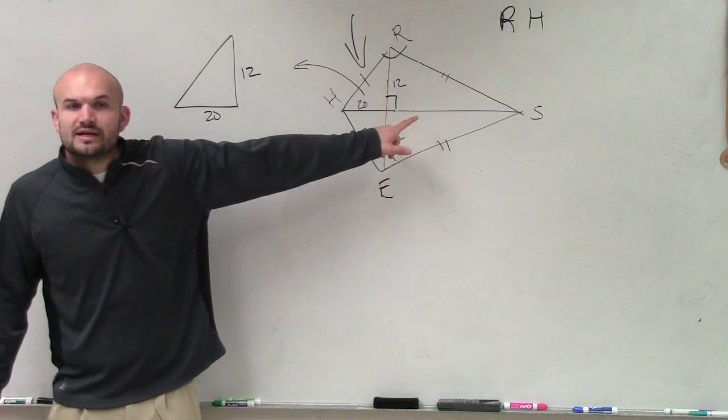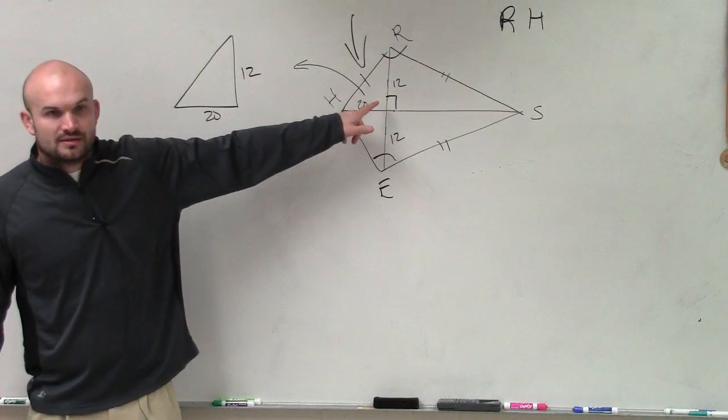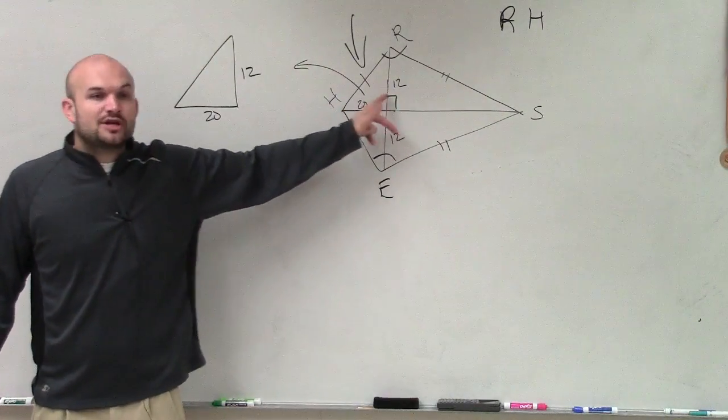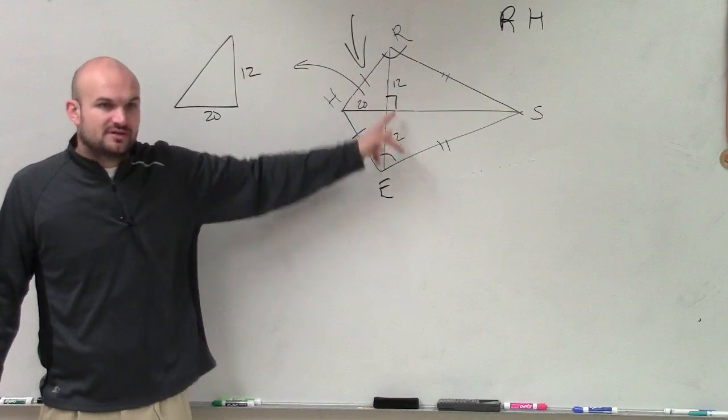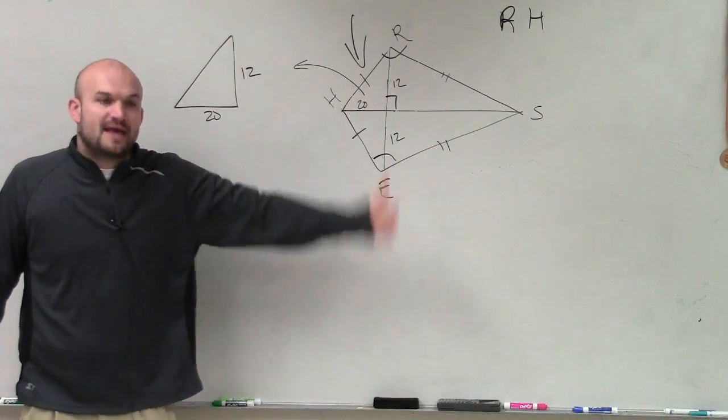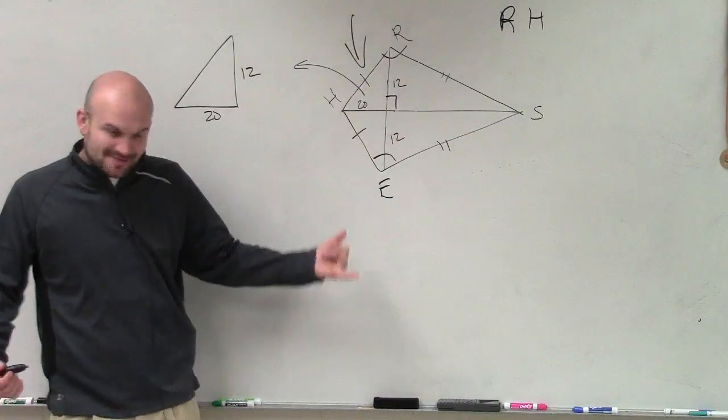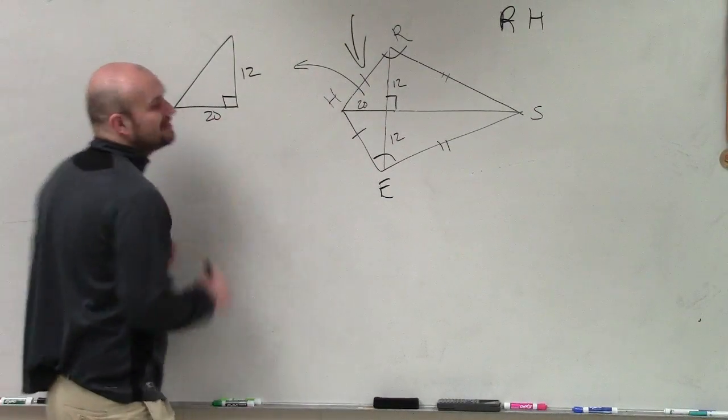Now, if this is 90 degrees, what do you guys think that has to be? 90, because those are a linear pair. They make up a line. They share the vertex of one side, so it's a linear pair, meaning they add up to 180. If one is 90, then the other one has to be 90. So that is a right angle.